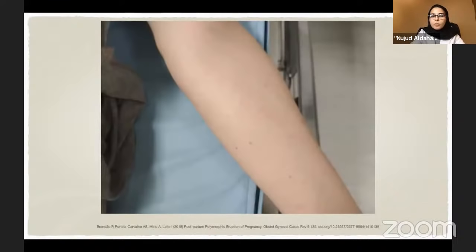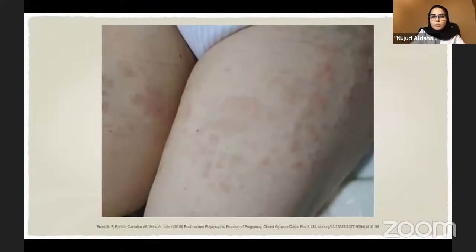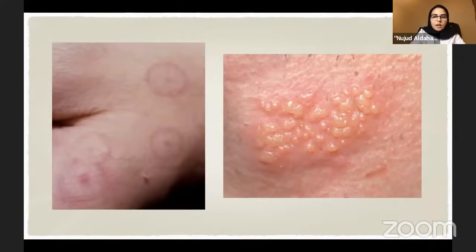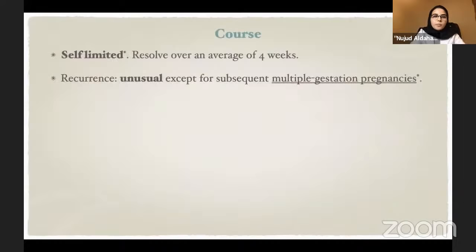This patient shows typical polymorphic eruption of pregnancy: erythematous papules and plaques following the lines of the striae with typical periumbilical sparing, plus involvement of the forearms and anterior upper thighs. After one week of topical steroids, there is improvement with some post-inflammatory hyperpigmentation. From the polymorphic name, targetoid and vesicular lesions can also develop.